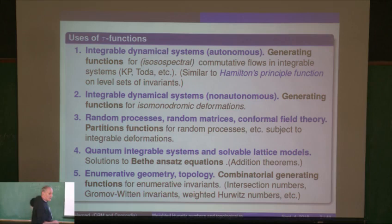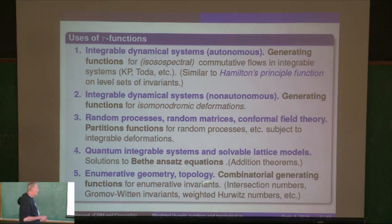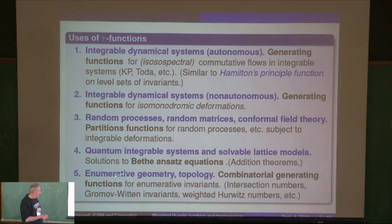The last use is what I'm going to talk about today: purely as generating functions for various enumerative invariants of geometrical or topological sorts — such as what we've seen already, intersection numbers from the Gromov-Witten invariants — and what I'll talk about today is weighted Hurwitz numbers. That's the placing of this particular talk in the context of many different embodiments of tau functions.